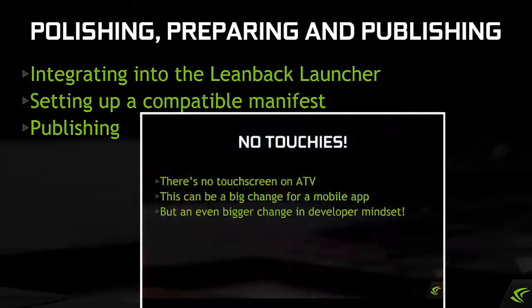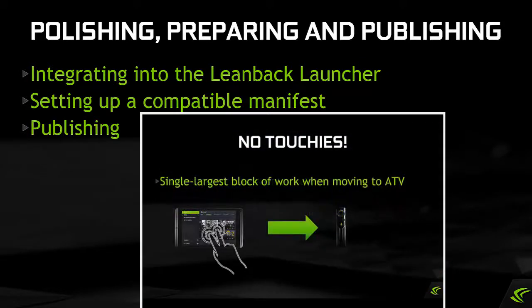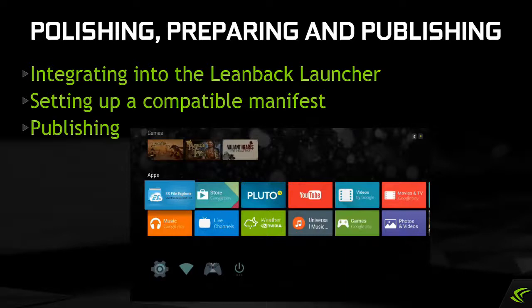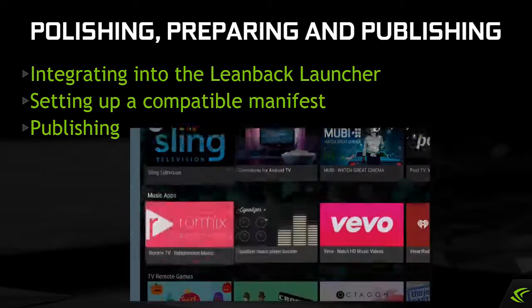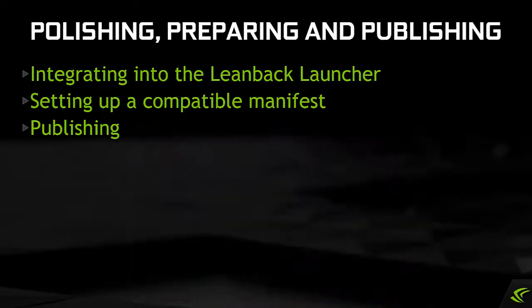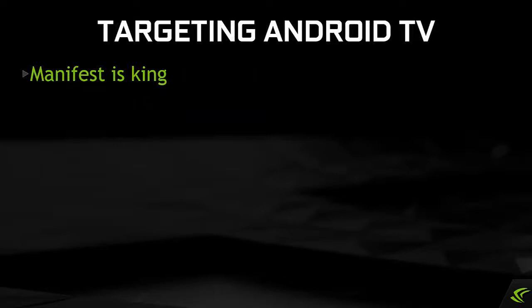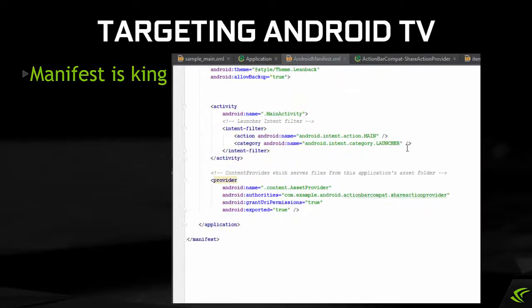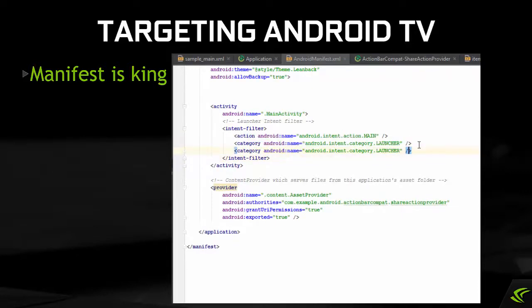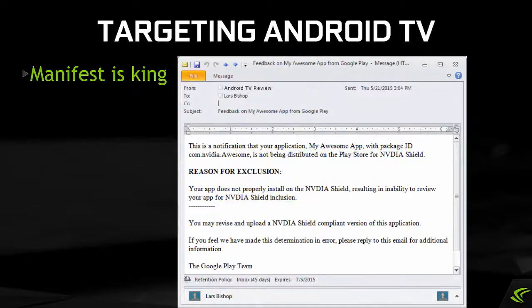In our previous video, we explained the basics of upgrading an existing handheld application on Android to work on Android TV. This video covers the steps required to make your application appear in the Android TV Launcher and in the Android TV Play Store. Most of what we will discuss will be applicable to apps and games, but we're going to focus on the needs of non-gaming apps in this series. This session will focus more on the all-important Android manifest XML file that declares information to the Play Store about your application. Getting the manifest wrong can lead to your application being needlessly limited from running on key devices in the market, or worse, being rejected on Android TV entirely.